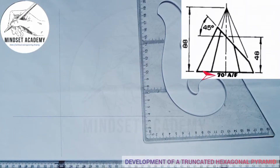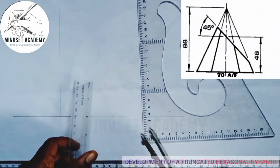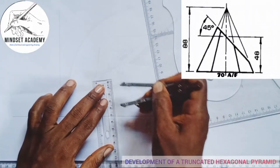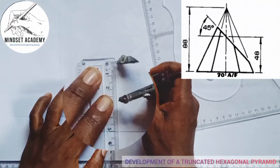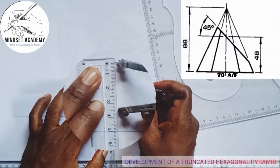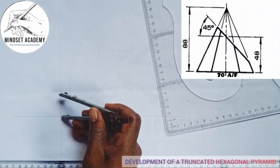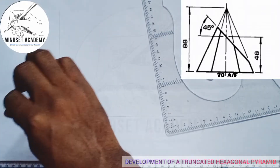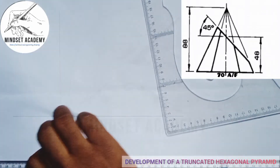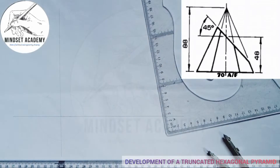Since we are told 70 millimeters across flat, I will take half of it, which is 35. I'll place it at the center here and draw a faint circle line.